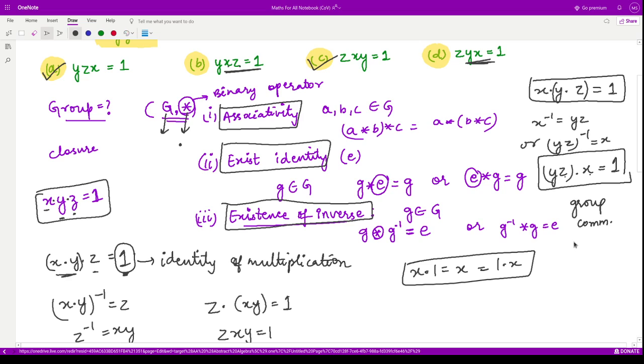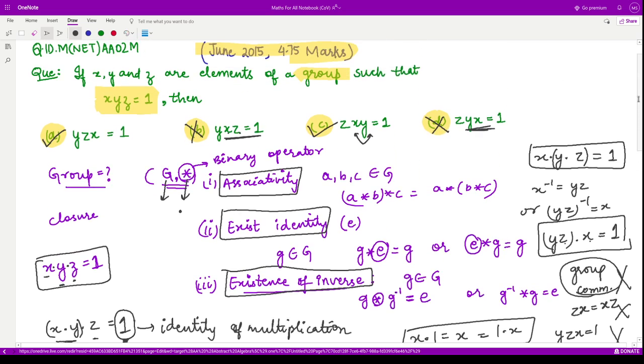In that case we would have written xz equals zx, and then this term yzx equals one would become yxz equals one. But this is not the case, as the given group is not commutative in nature. Therefore this option is not correct. Similarly, if you were given the property of commutativity, then you can commute these two and you will get the result. But in this case this is not the case. Therefore the only correct options are option a and option c.